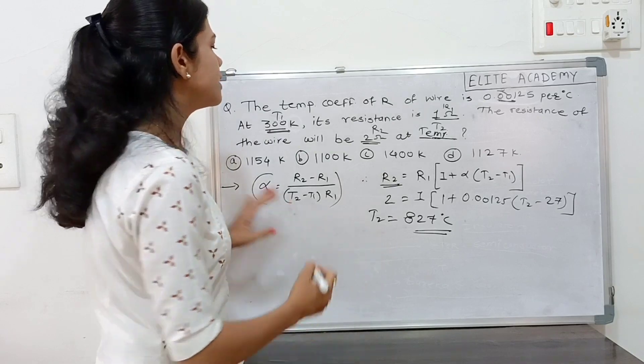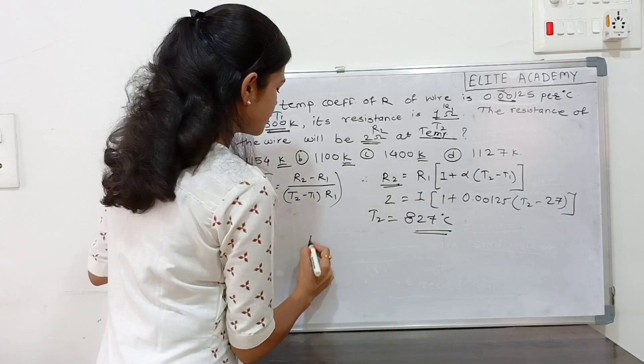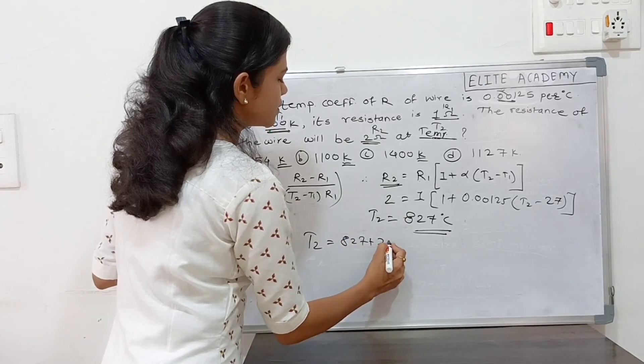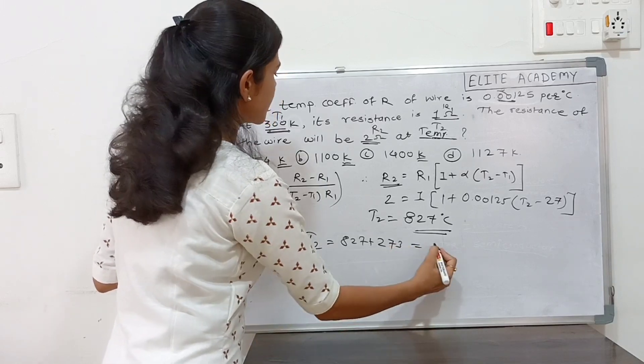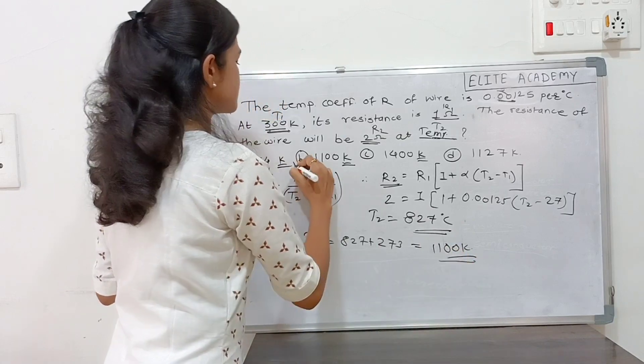After solving this numerical we will get 827 degrees Celsius T2. But we need the answer in Kelvin. Therefore for Kelvin conversion 827 plus room temperature 273. Add this you will get 1100 Kelvin and this is the answer B.